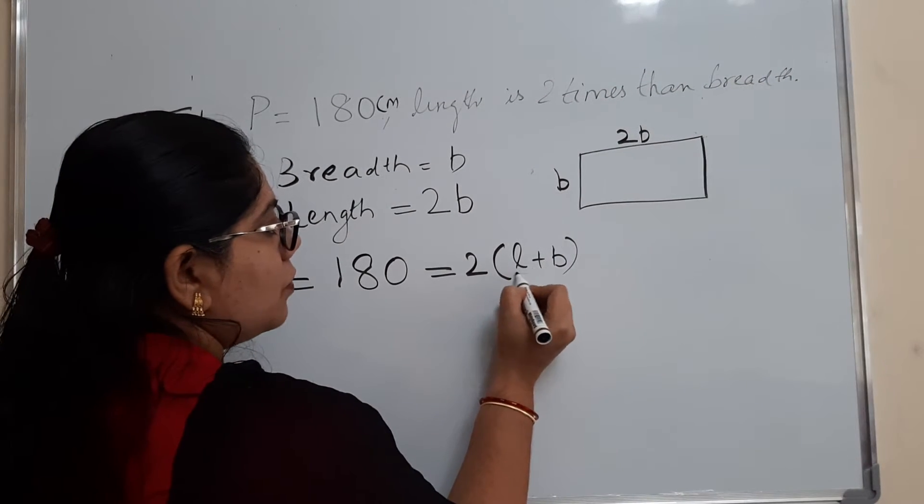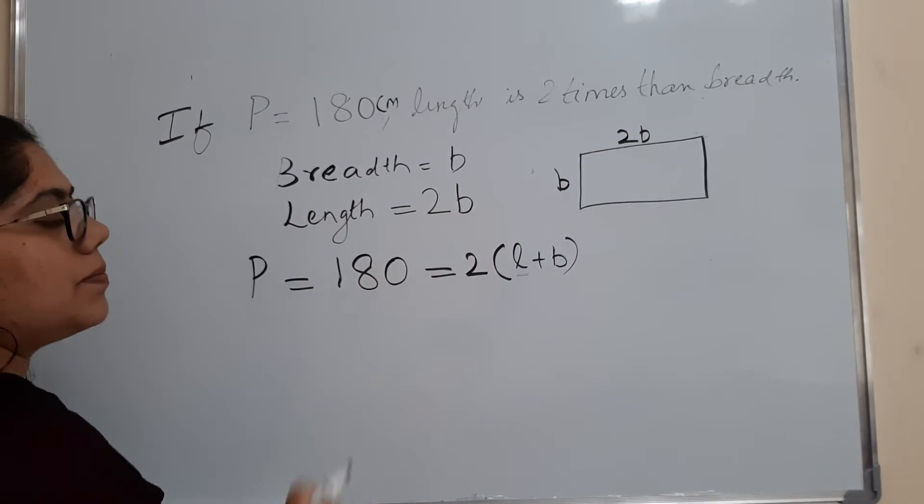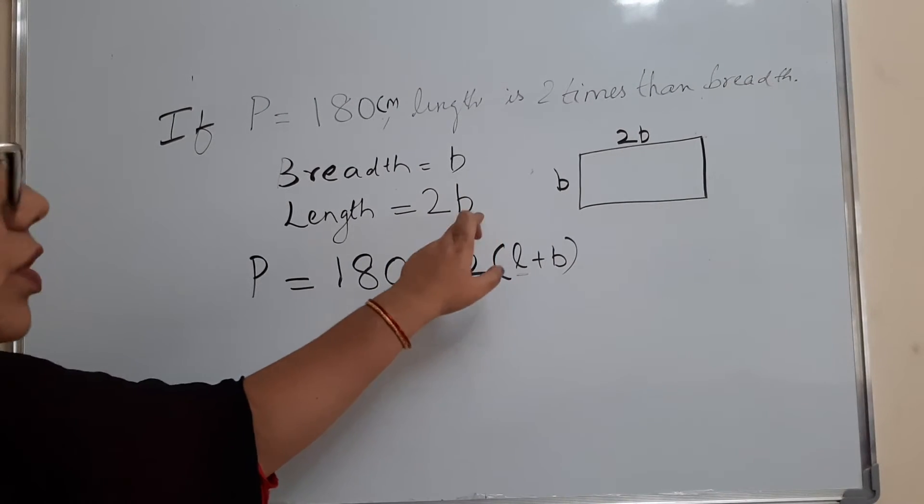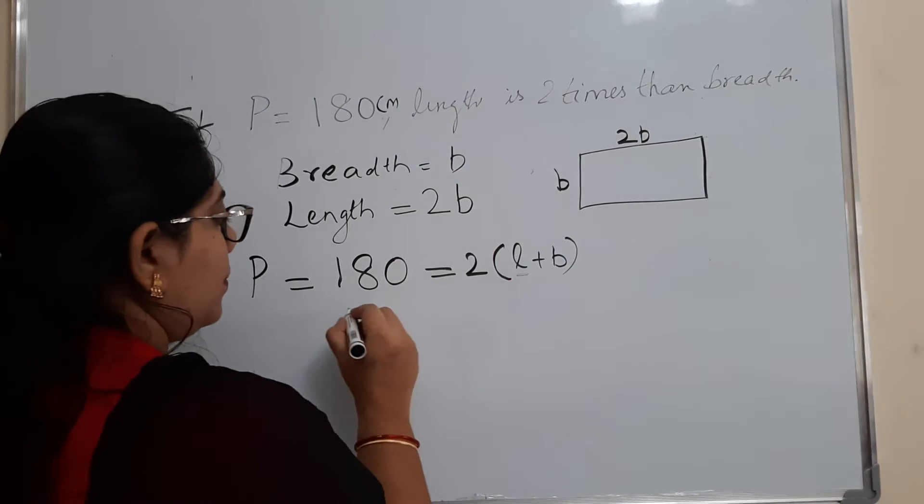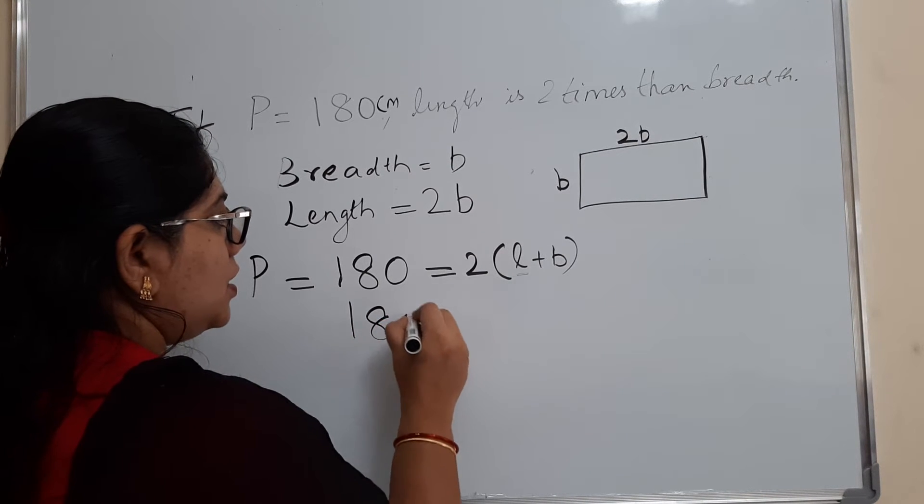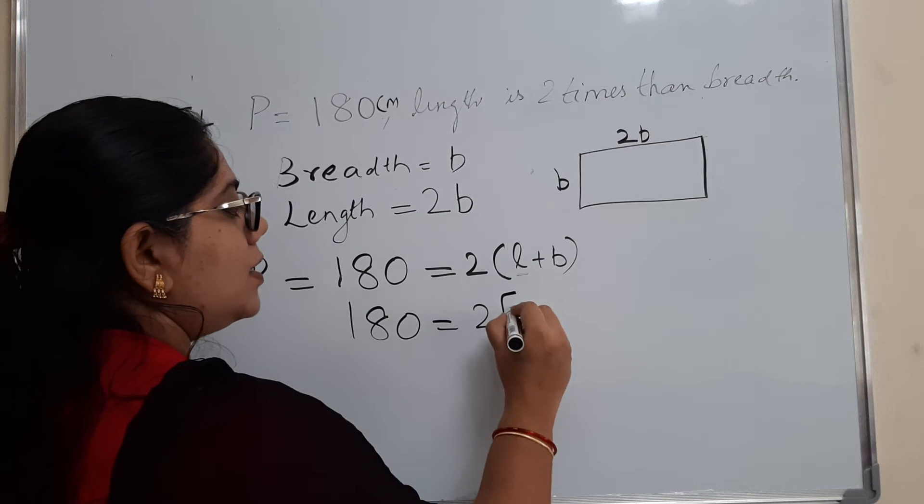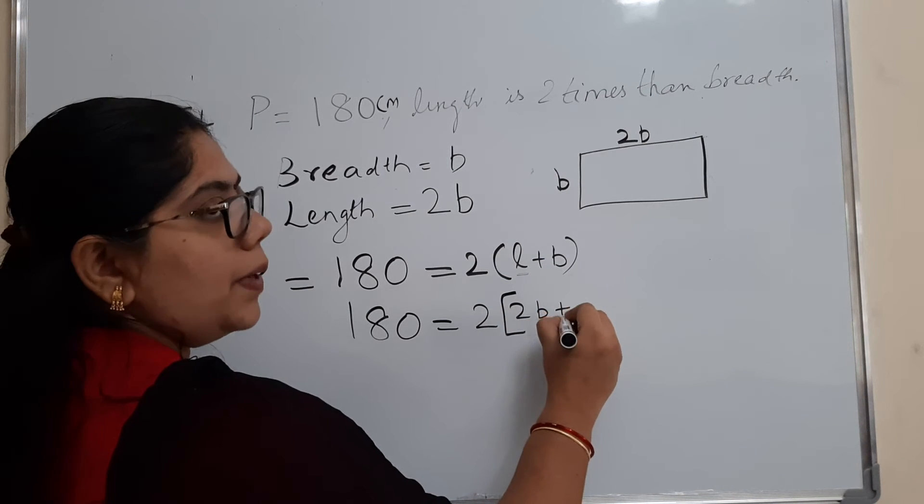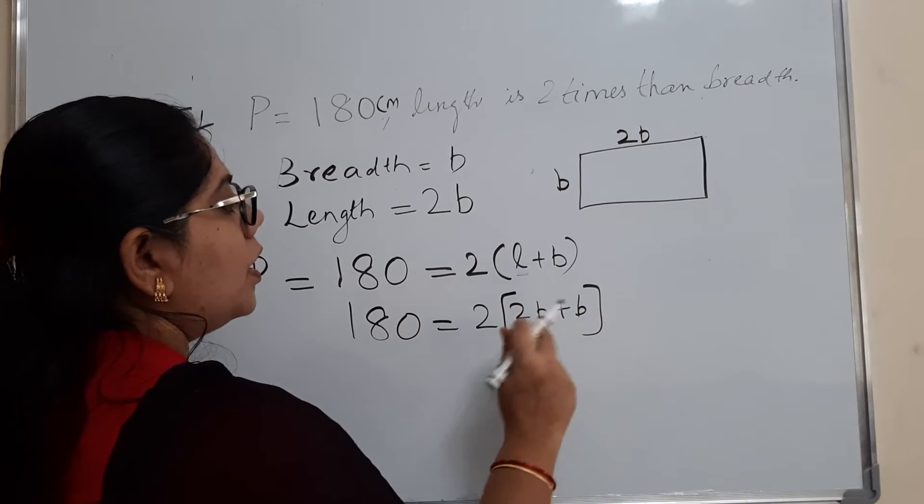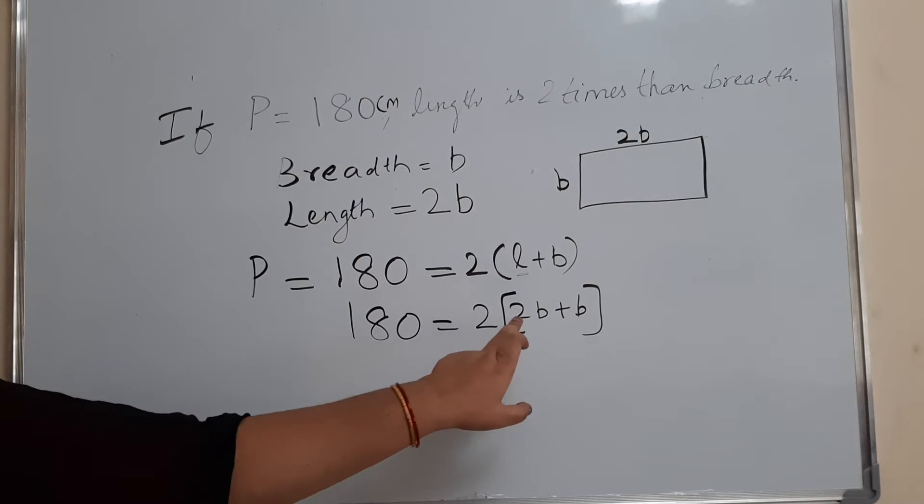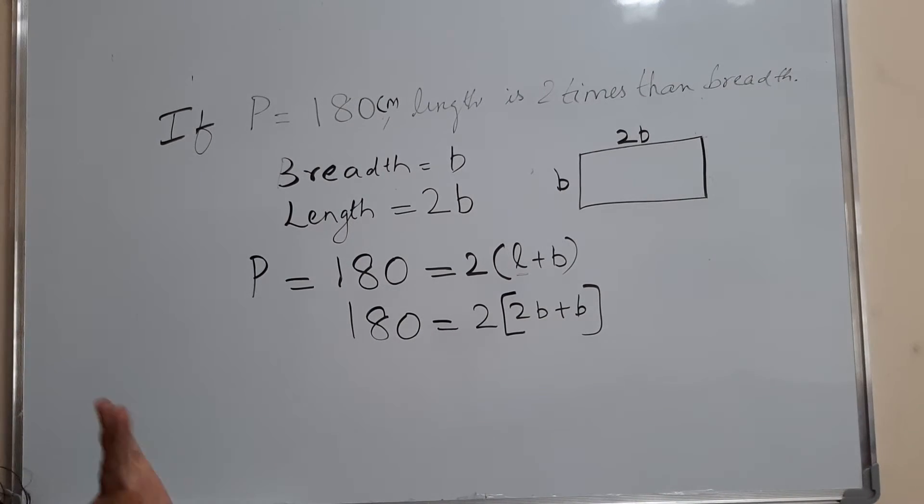So here, instead of this L, we want to substitute 2B, which is given in the question. So 180 is equal to 2 into (2B plus B). 2B plus B is what? 3B.